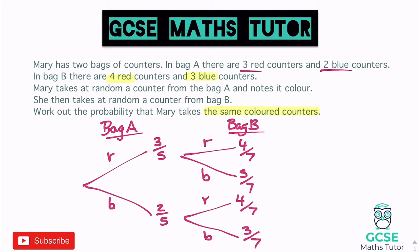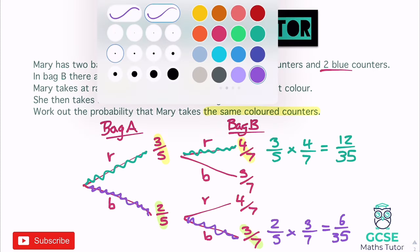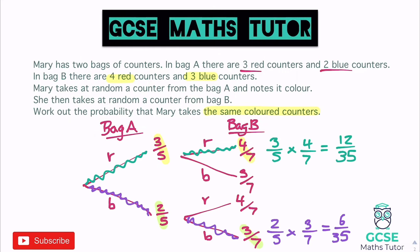The question asks: work out the probability that Mary takes the same colored counters. For the same colors, we could get red then red — going through 3/5 and 4/7. Multiplying: 3/5 × 4/7 = 12/35. For two blues, we go through 2/5 and 3/7. Multiplying: 2/5 × 3/7 = 6/35. To finish, we add them together: 12/35 + 6/35 = 18/35.